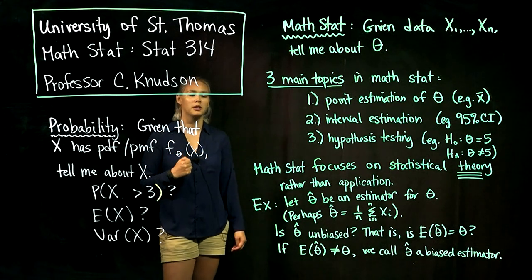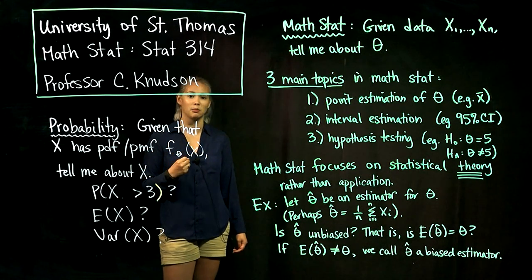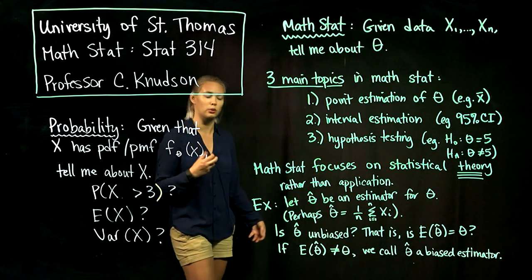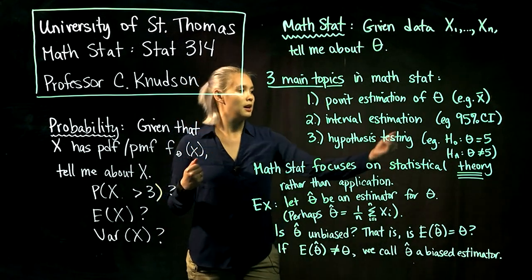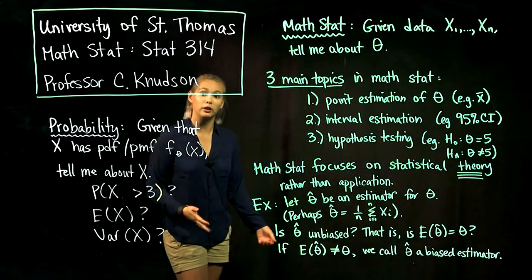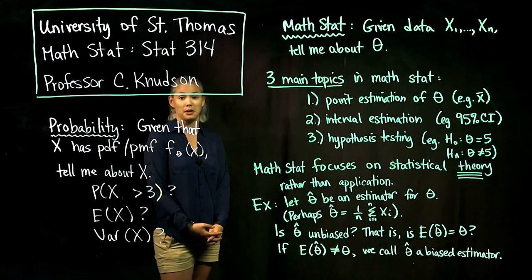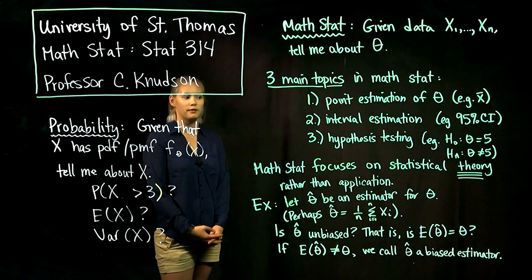And then finally we're going to talk about hypothesis testing. So a hypothesis test that you might have done in an intro course or an applied statistics course is something like this: the null hypothesis is the parameter is equal to some value, maybe five, and then the alternative hypothesis is that parameter is maybe not equal to the value five.